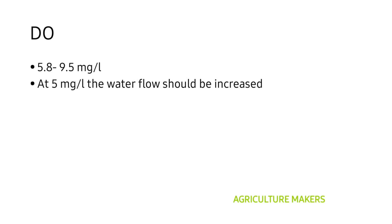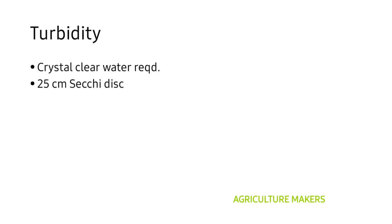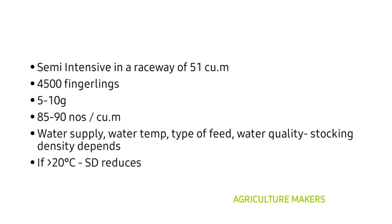The dissolved oxygen level should be between 5.8 to 9.5 milligrams per liter for optimum growth of trout. At 5 milligrams per liter, water flow should be increased to raise the dissolved oxygen content. Below 5 mg/L, development and growth of the fish is very low. Turbidity is not good for trout farming — water should be crystal clear. The Secchi disc reading for turbidity should be 25 centimeters, which is optimal for trout growth. Remember: the Secchi disc is used for measuring turbidity.